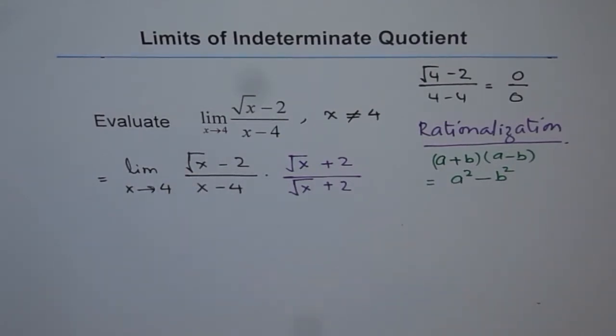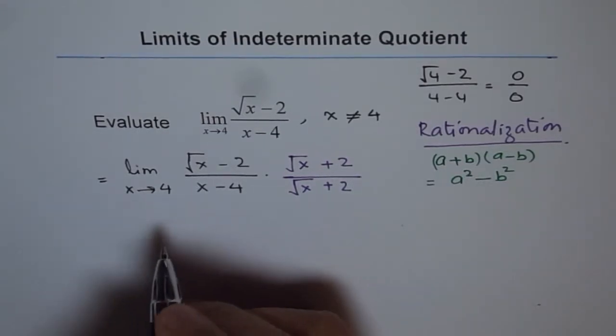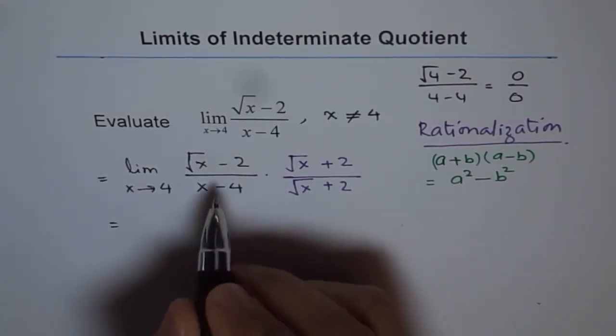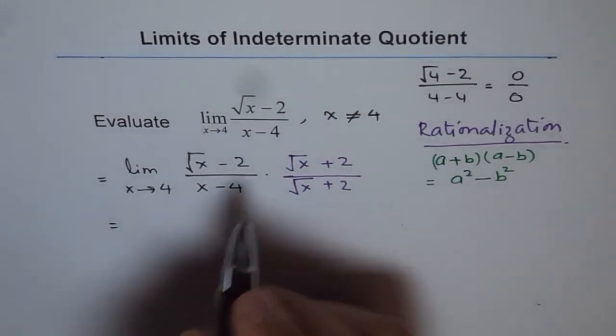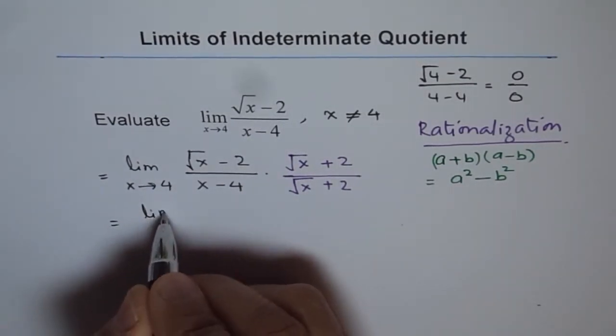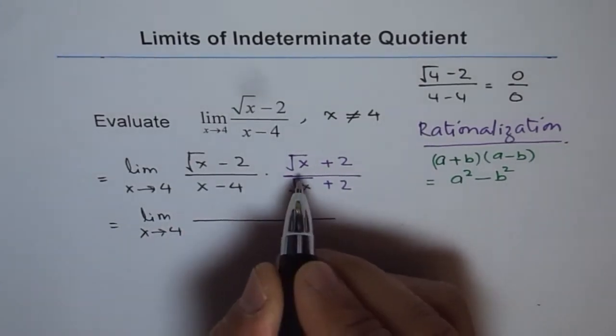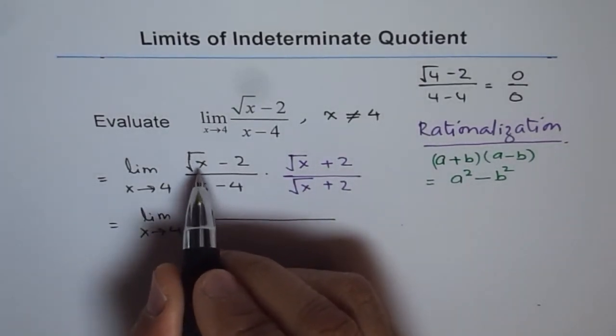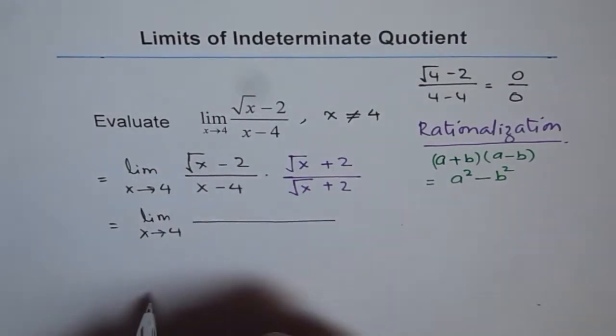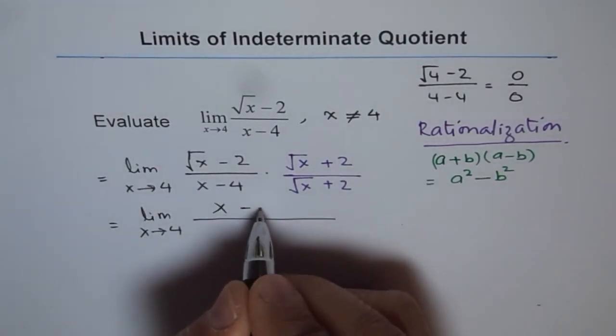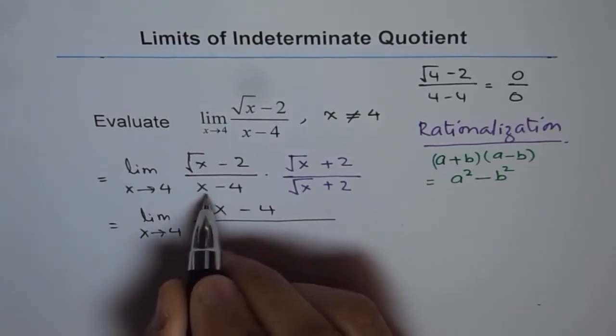And this technique is very effective in solving any problem with square roots. So, let's multiply the numerator and get rid of the square root. So, we get limit x approaches 4. And in the numerator, we get square root of x squared minus 2 squared, correct? Which is x minus 4.